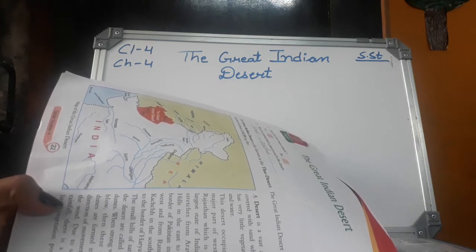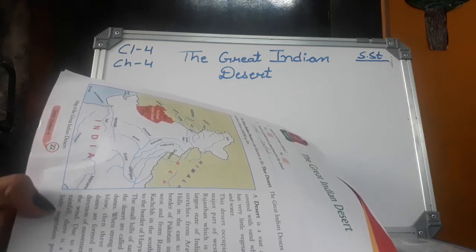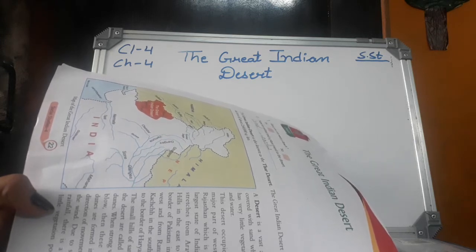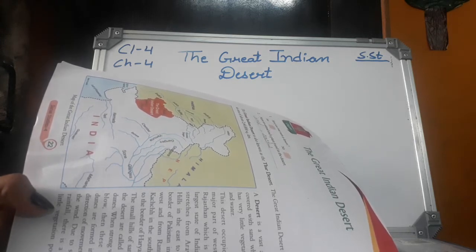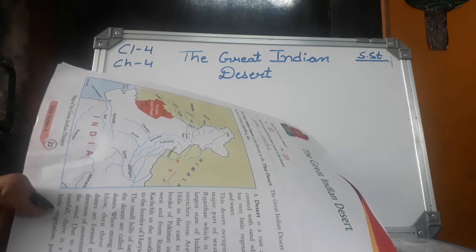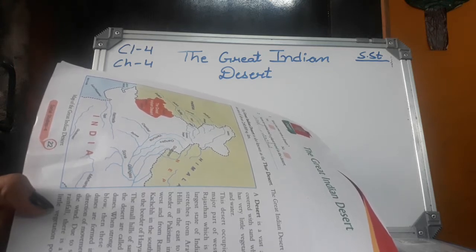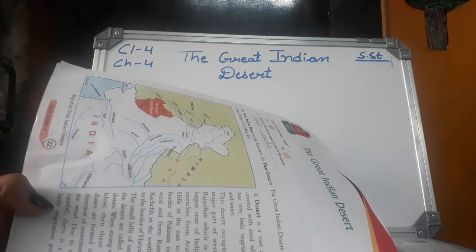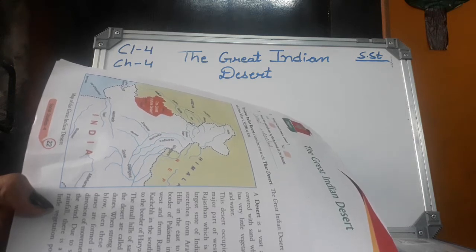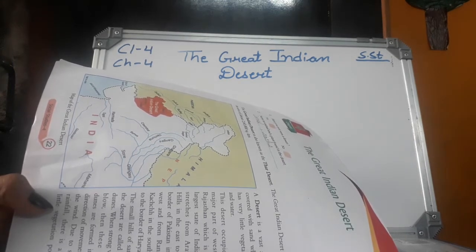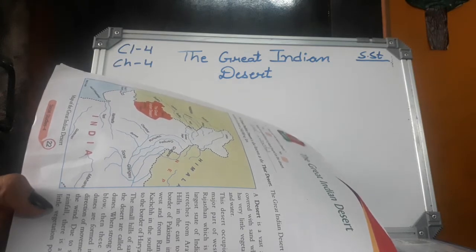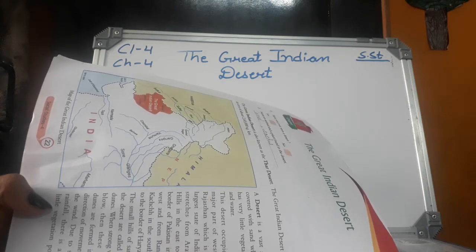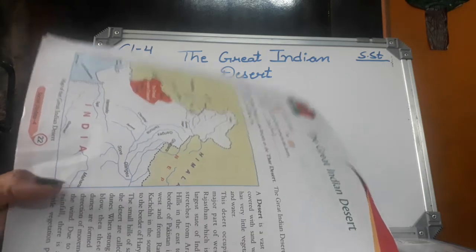Due to scanty rainfall, there is very little vegetation possible in the desert. There are some places where underground water comes up to the surface. This helps in the growing of trees like date palm, keekar, acacia, babul, etc. Such a green and lush area in the desert is called an oasis. People live here permanently and grow crops like maize, gram, jowar, bajra, wheat, etc.